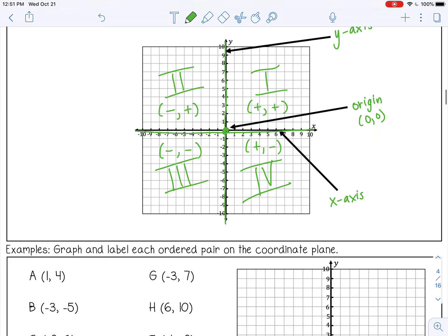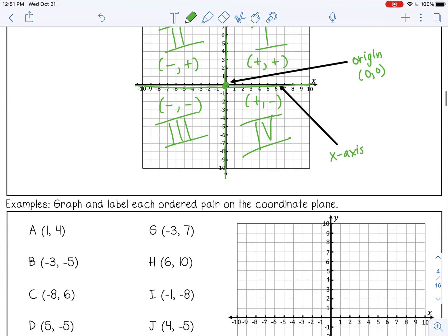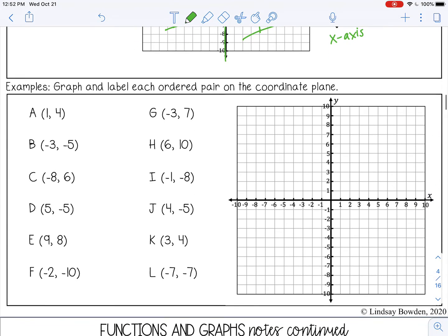Let's practice graphing these coordinate points. I'm going to graph point A at one, four. Remember when you're graphing points, you always go left and right first, and then up and down. So I'm going to go positive one, so right one, and then positive four, so up four. And that's point A.